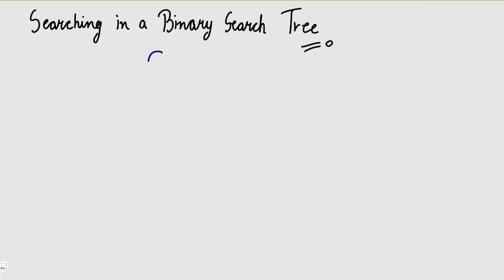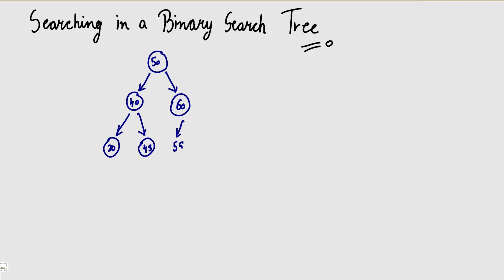I will make a binary search tree like this. I will write 50 at the root. Then 40 on the left and 60 on the right. I will make a BST sample — here I will write 45, and here I will write 70. This is a BST.